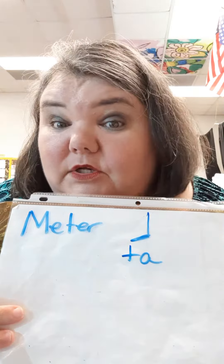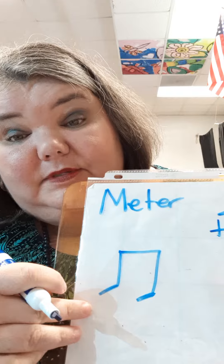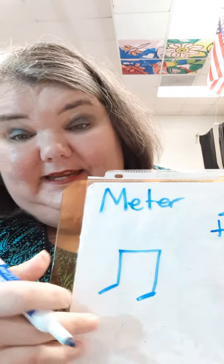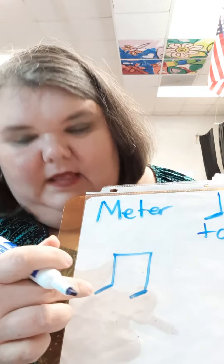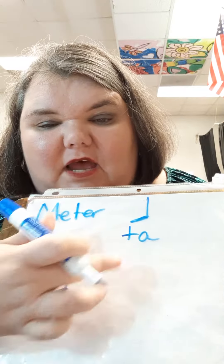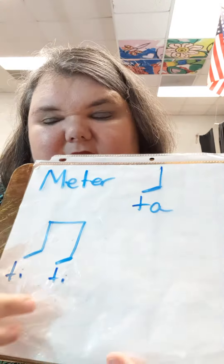And we're going to shorten that 'ta.' One of the ones we're going to use is this one — these are called paired eighth notes. And you say 'ti, ti.' Everyone say 'ti, ti.' So we have 'ta' and we have 'ti, ti.' Do you see that? Ta and ti-ti.